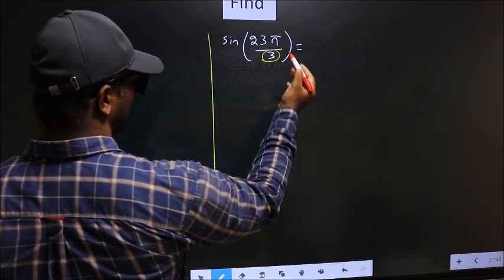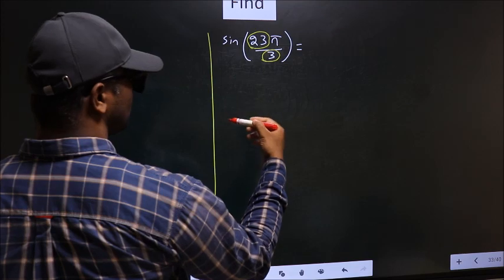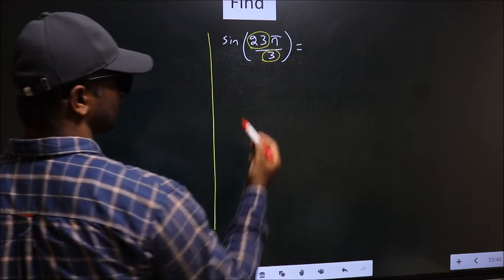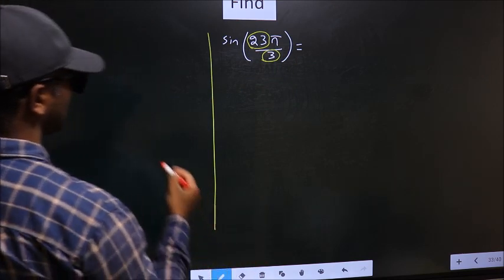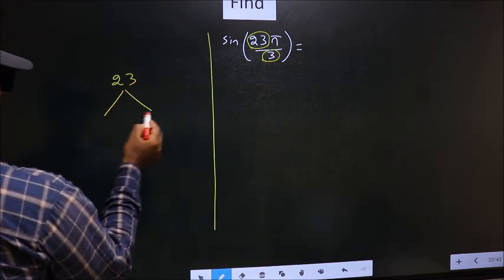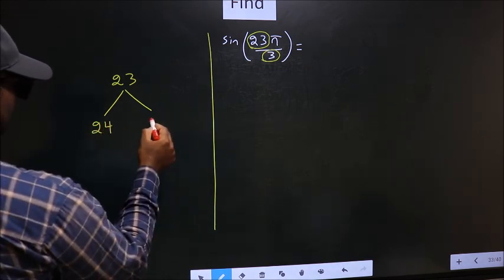Here we have 3 and in the numerator 23. Now you should look: 23 is close to which multiple of 3. What I mean is, 23, and here you write multiples of 3: 24 and 27.